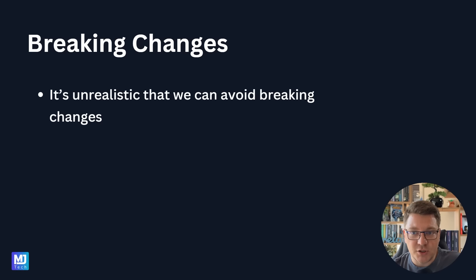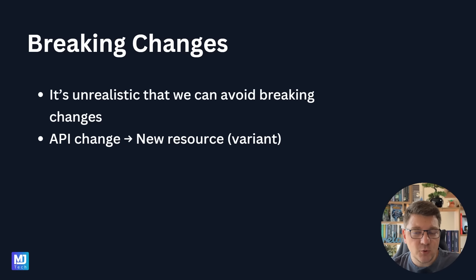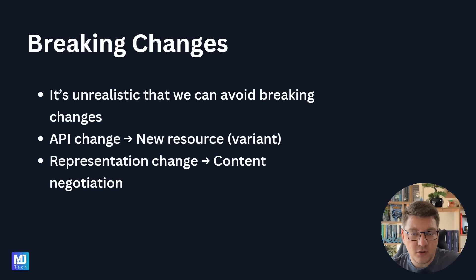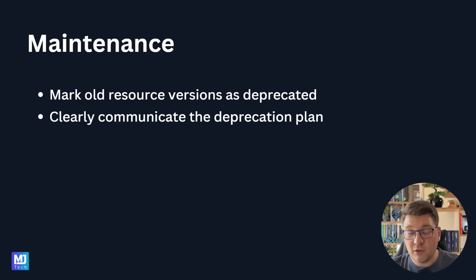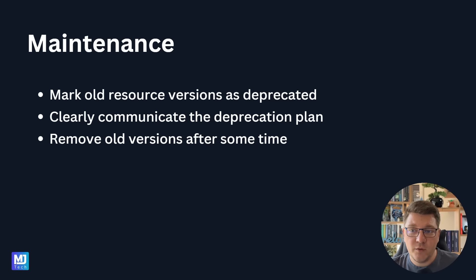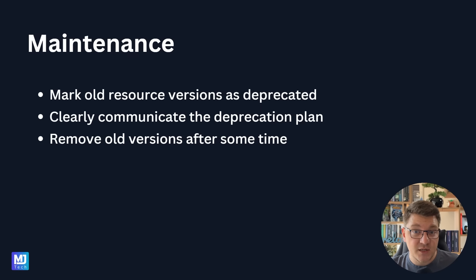Sometimes we really can't avoid breaking changes. So if we can't version our APIs, what options do we have? If we have to change the API because of a different business rule, then we can introduce a new resource — a new endpoint that we want our API clients to migrate to. If we want to change our representation of the resource, we can use content negotiation to tell the API which representation we want, while still calling the same API endpoint or URL. Even with this approach, we need to maintain our API as we evolve it. In due time, we can mark all resource versions as deprecated, clearly communicate the deprecation plan to our clients, monitor which clients are using older versions, and help them move to the new representations. Eventually we can remove the old versions completely, successfully managing API updates without resorting to explicit API versioning.